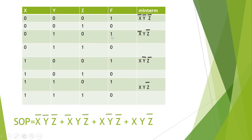For the case 1-0-0, we write X, Y-bar, Z-bar. For case 1-1-0, we write X, Y, Z-bar. The SOP is the sum of these minterms: X-bar·Y-bar·Z-bar + X-bar·Y·Z-bar + X·Y-bar·Z-bar + X·Y·Z-bar. That is the SOP.